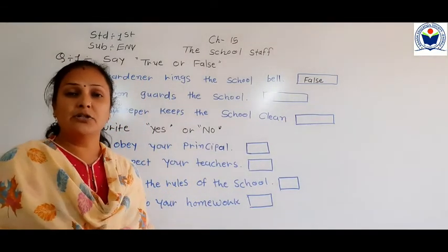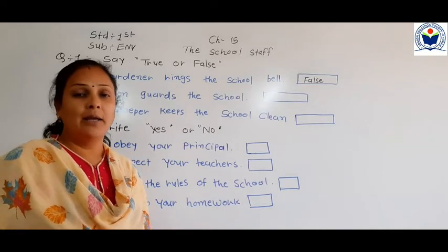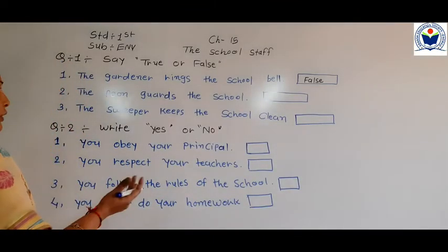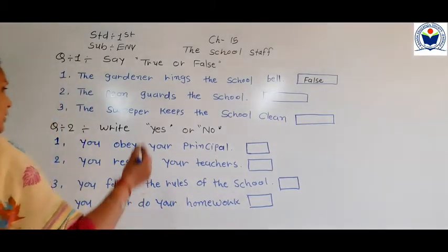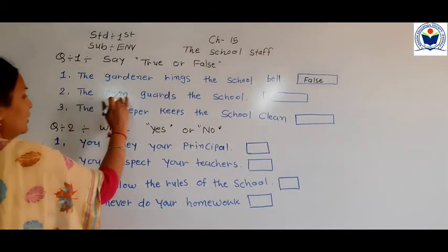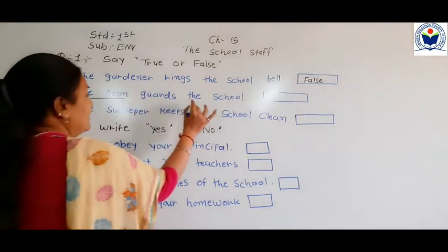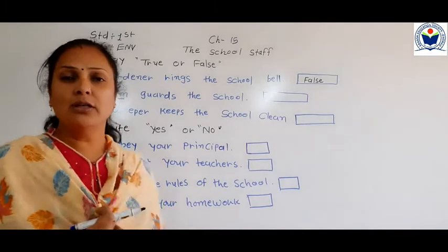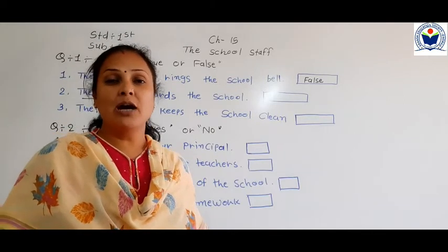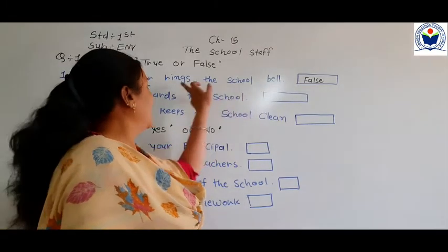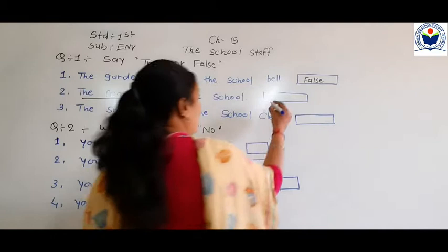Gardener की special job है garden की care करना, plants को protect करना। School की bell कौन बजाता है? Very good — peon बजाता है। तो यह sentence false हुआ। Next: 'The peon guards the school.' School को guard कौन करता है? Peon का काम है school की bell बजाना, तो यह sentence भी false है।